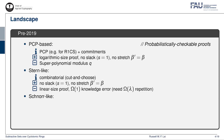The second type of argument systems for the SIS relation are called Stern-like systems. These are combinatorial systems based on the classic cut-and-choose technique. Like the PCP-based proof systems, these Stern-like systems can prove the SIS relation without any slack and stretch. However, due to the combinatorial nature, they often require linear size proofs and can only achieve constant knowledge error, which means the argument needs to be repeated lambda times, where lambda is the security parameter, to achieve negligible knowledge error.